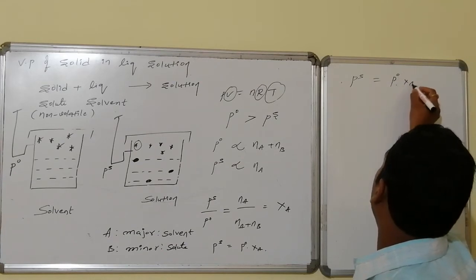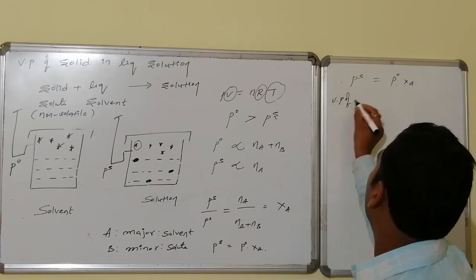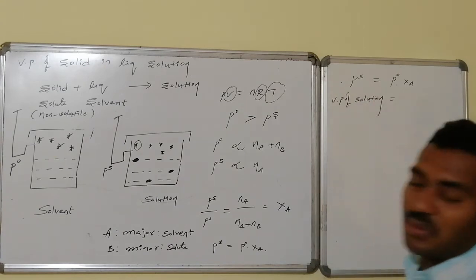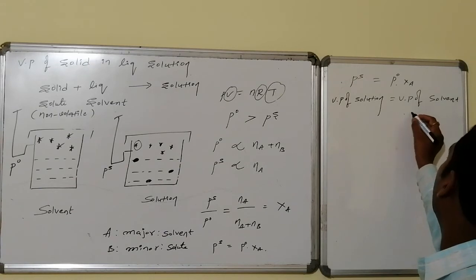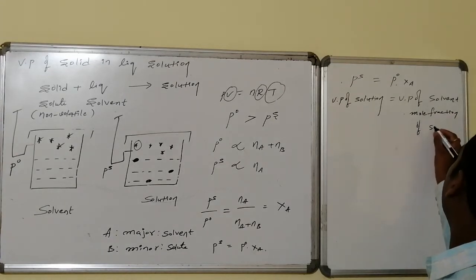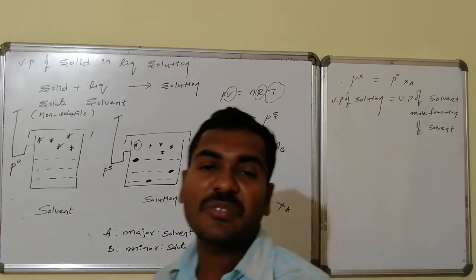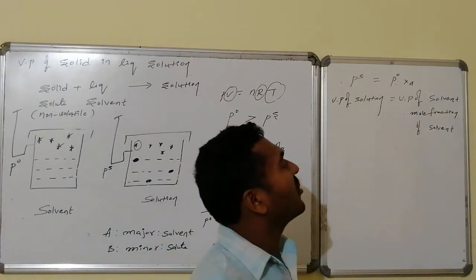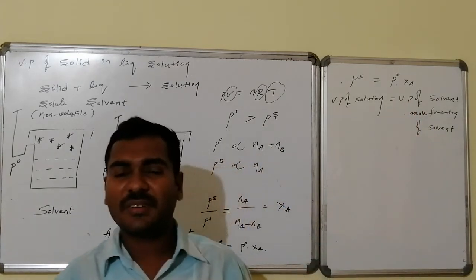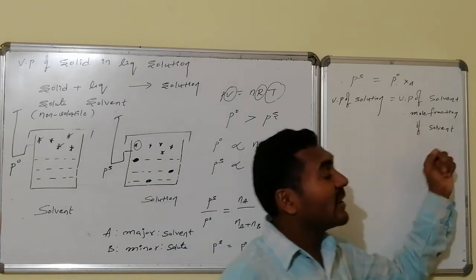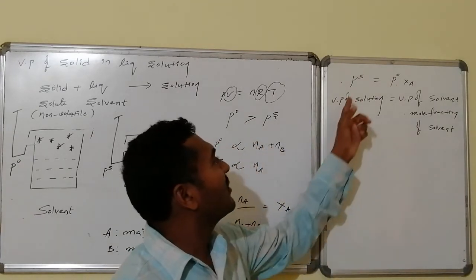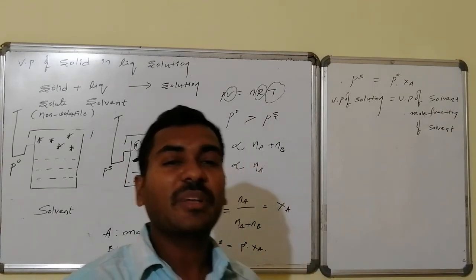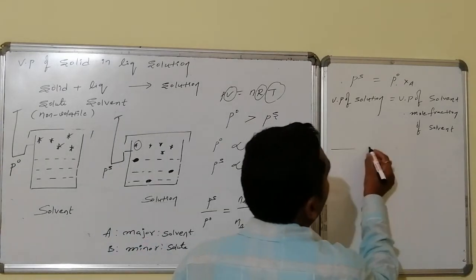Thus, Ps = P0 × XA. The vapor pressure of solution equals the vapor pressure of the pure solvent multiplied by the mole fraction of the solvent. Since mole fraction is always less than 1, Ps is always less than P0. This is known as Raoult's law.